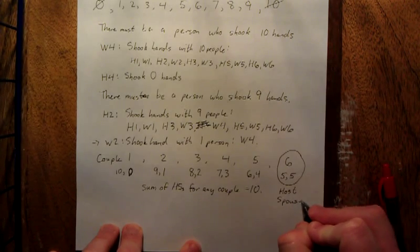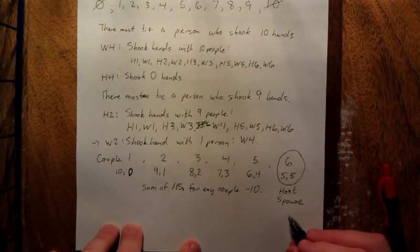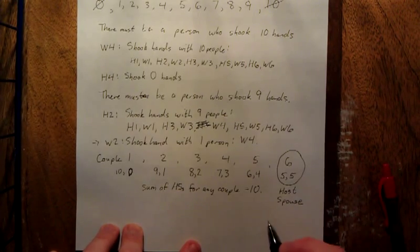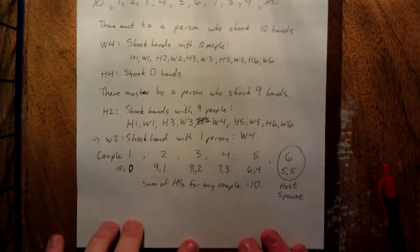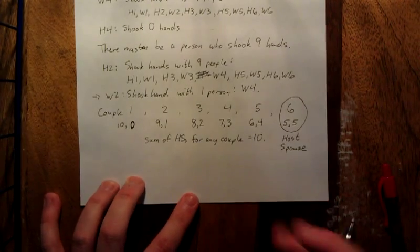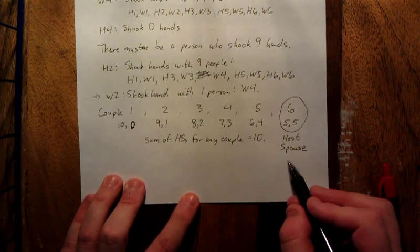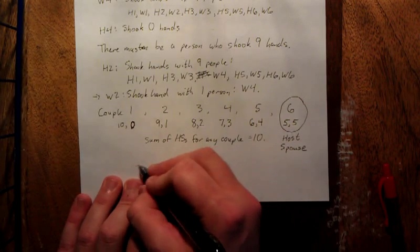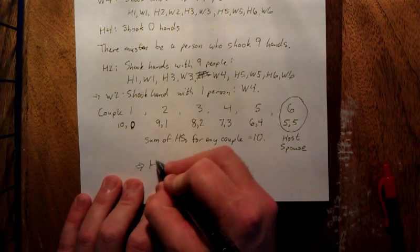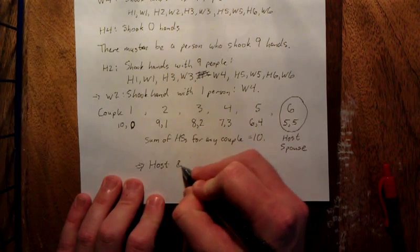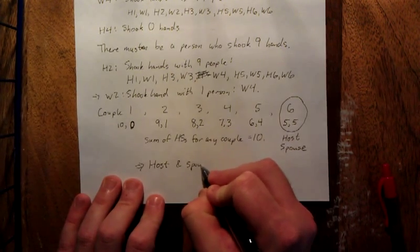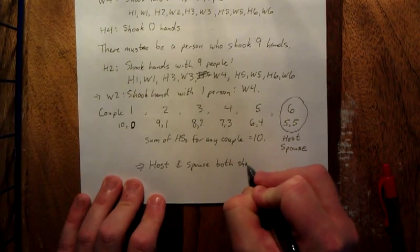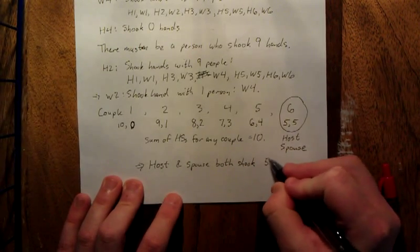Just like a person can't shake their own hand, you also cannot ask yourself with how many people did you shake hands. So the supplement to this problem is that not only did the host's spouse shake five hands, but the host also shook five hands. So the conclusion that we draw is that host and spouse both shook five hands.